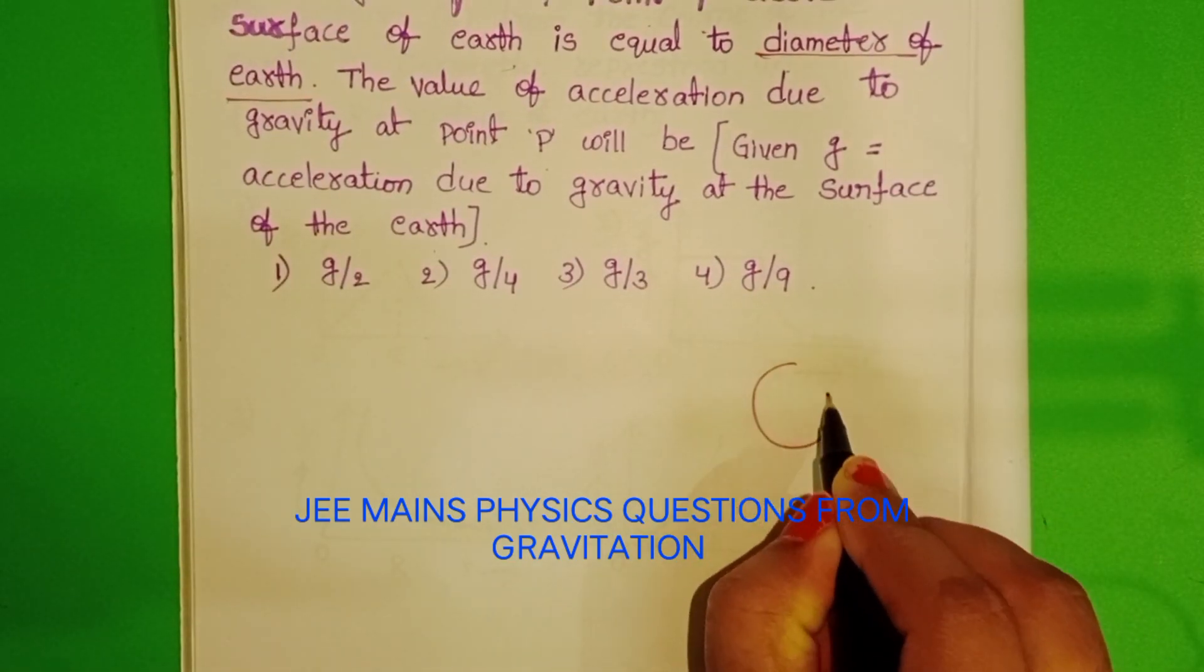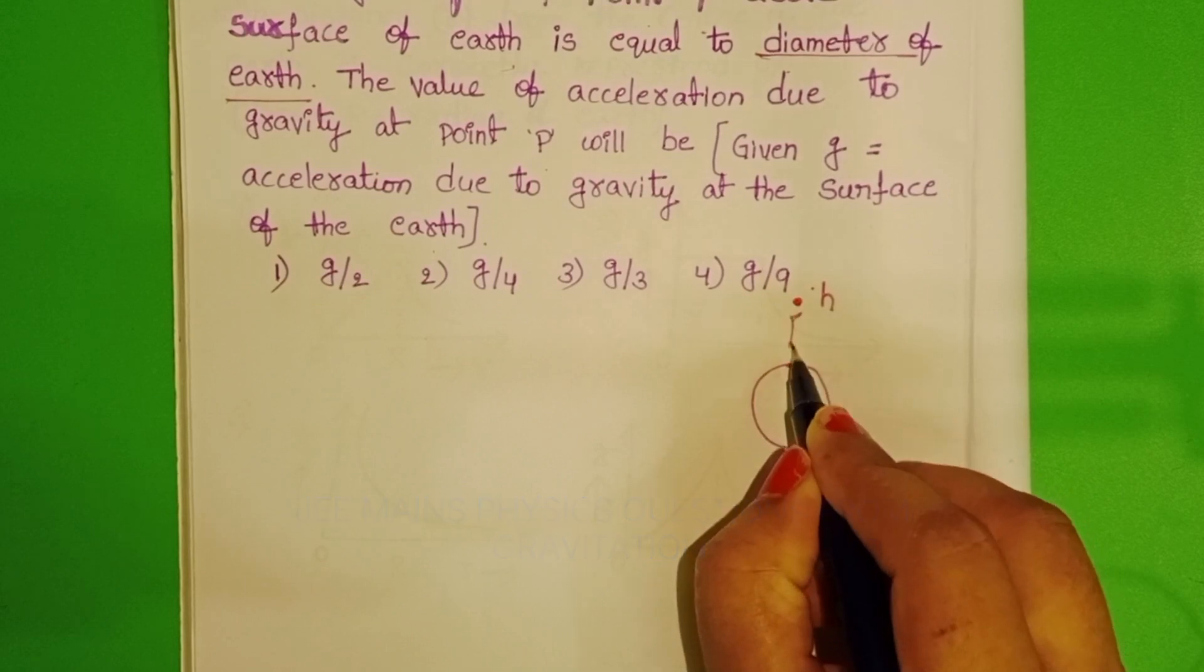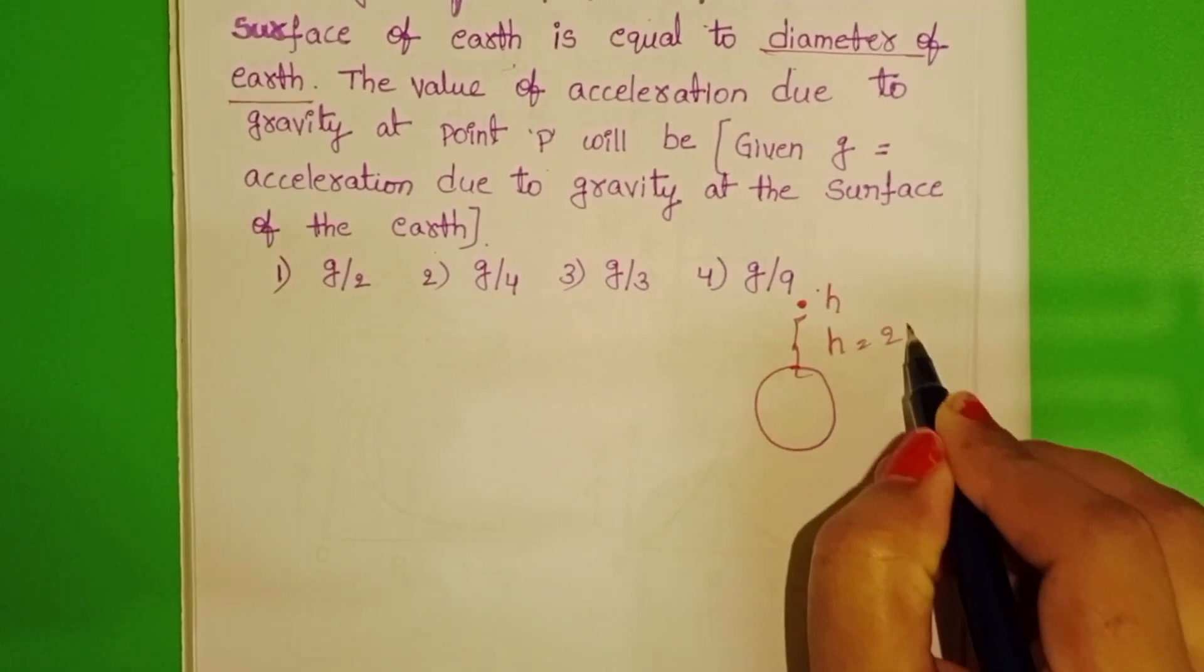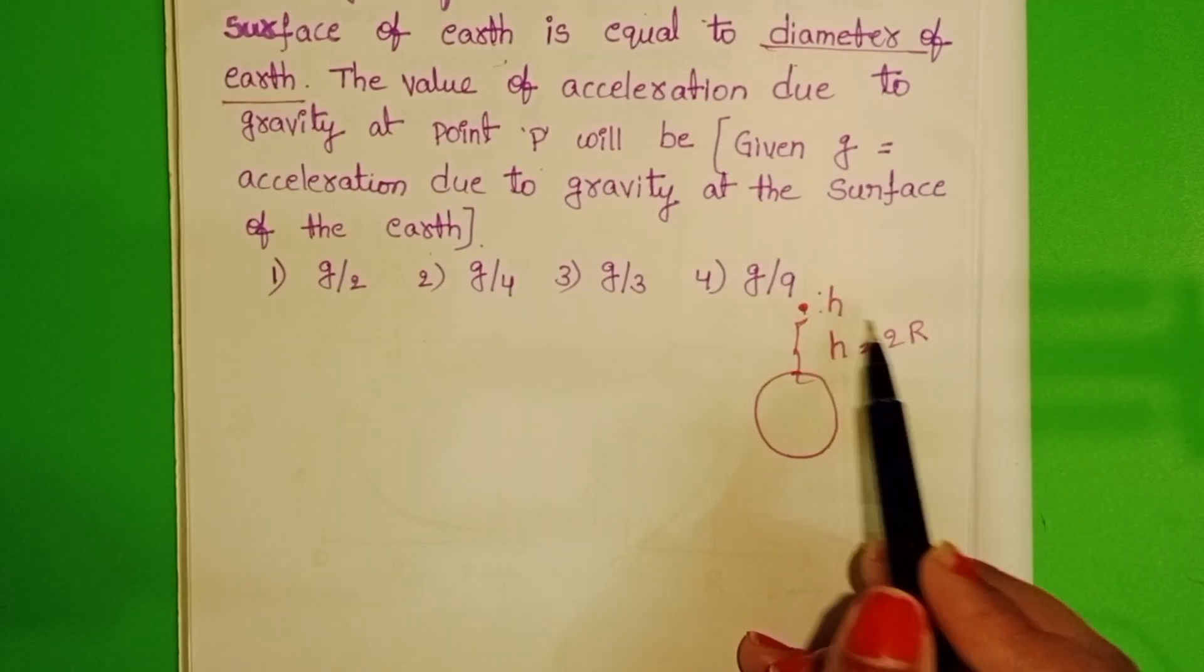In the given question, a point is located at a certain height. This height equals the diameter of the earth. H equals 2R. We have to find out the acceleration due to gravity at this height.